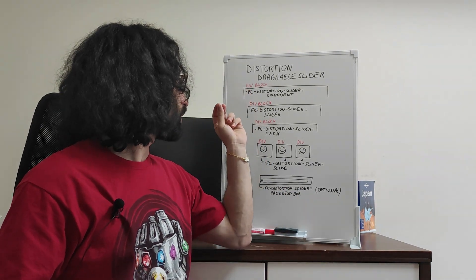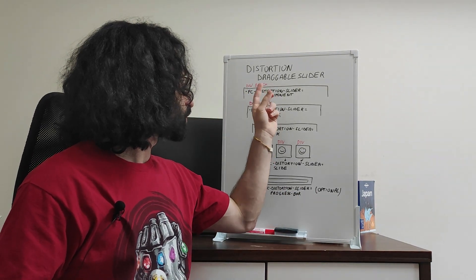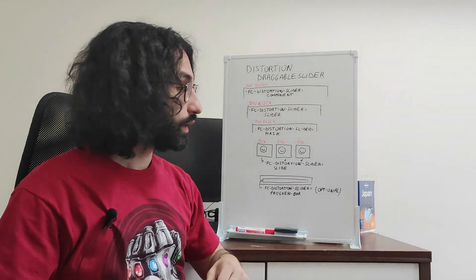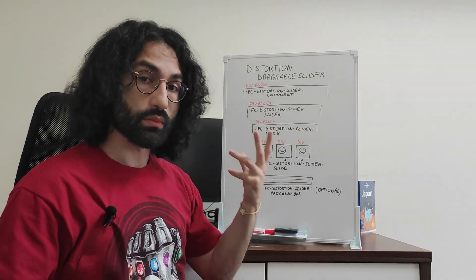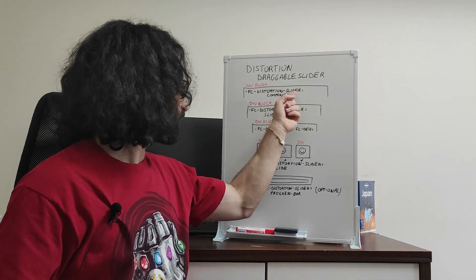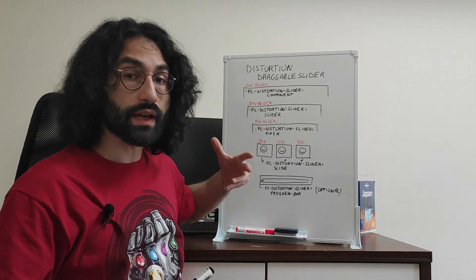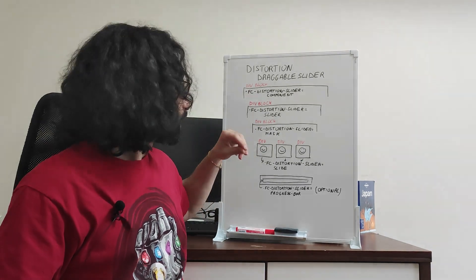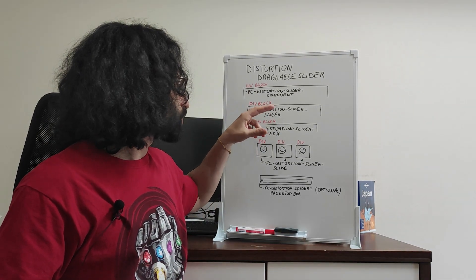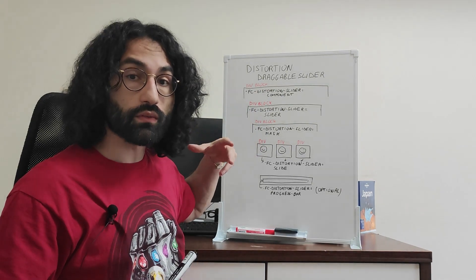To this div block we are going to add an fc-distortion-slider attribute with a value of component. Then, inside this component, inside this first div block, we are going to add another div block which will be our actual slider, and to this div block we are going to add an fc-distortion-slider attribute with a value of slider.